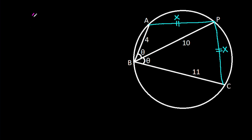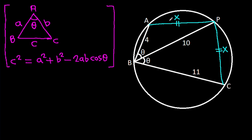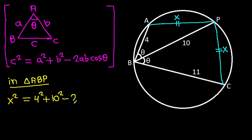Now, in any triangle, if AB is a, AC is b, BC is c, and this angle is theta, then c² equals a² plus b² minus 2ab cos theta. Applying this to triangle ABP with angle ABP: x² equals 4² plus 10² minus 2 times 4 times 10 times cos theta.